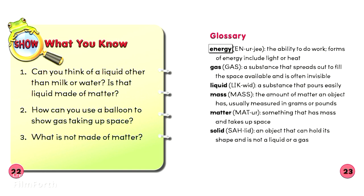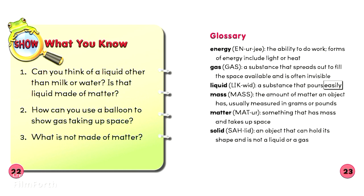Glossary. Energy: the ability to do work; forms of energy include light or heat. Gas: a substance that spreads out to fill the space available and is often invisible. Liquid: a substance that pours easily. Mass: the amount of matter an object has, usually measured in grams or pounds. Matter: something that has mass and takes up space. Solid: an object that can hold its shape and is not a liquid or a gas.